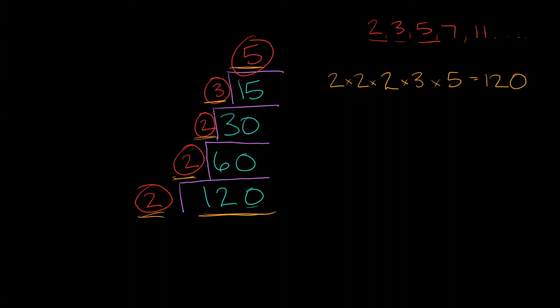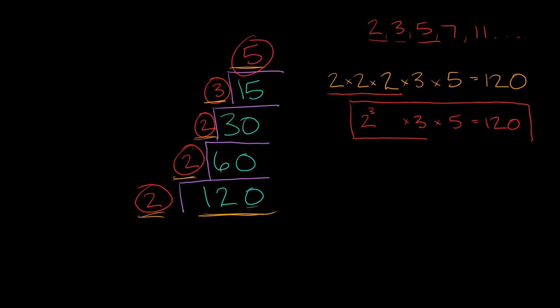We can simplify this a bit because we have repeating numbers — 2 times 2 times 2 can be rewritten as 2 cubed. Bringing down the rest of the answer: 2 cubed times 3 times 5 is equal to 120.